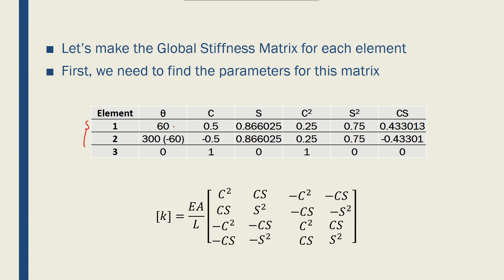We put those angles — 60, 300, and 0 — into a table and find the cosine and sine for each angle. Then we compute cos² and sin² and the cosine-sine product, because those are the elements we need to build the global stiffness matrix for every element in the truss. We can do this with a computer program or even Excel, since the angles make it tedious to compute cos, sin, and their squares by hand.